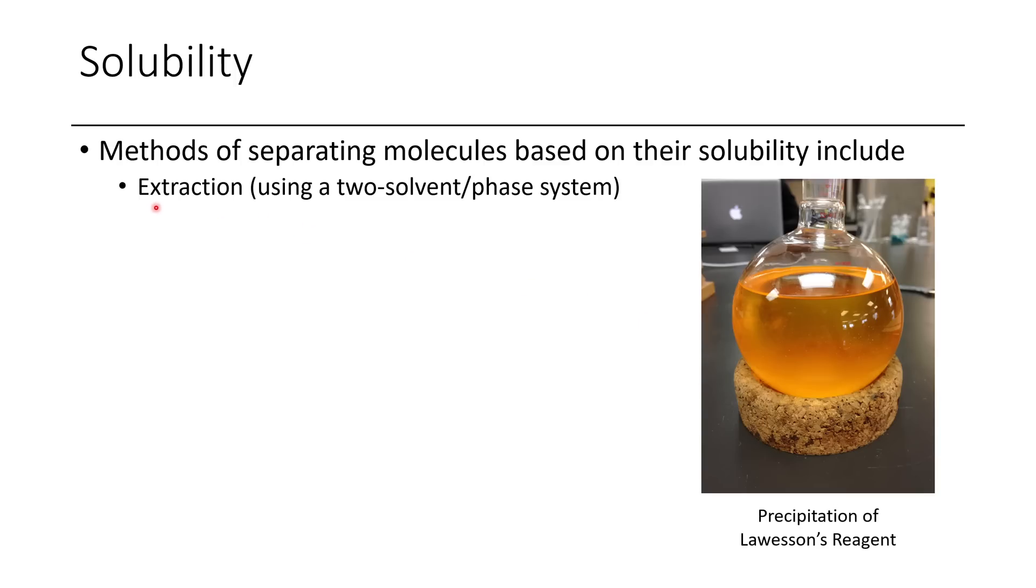One of the things you can do is extract stuff from one phase to another using a two-solvent or a two-phase system. This is quite often done with water as well as an organic solvent, although you can use two different organic solvents such as ether and DMSO, or pentane and acetonitrile.